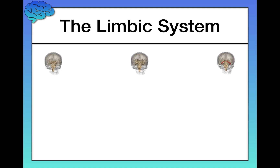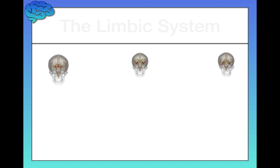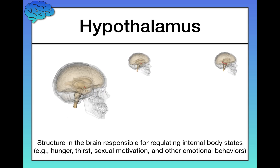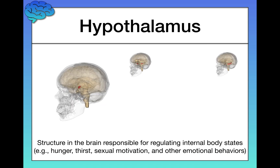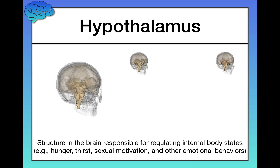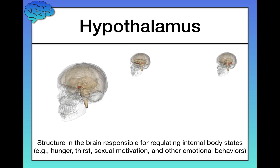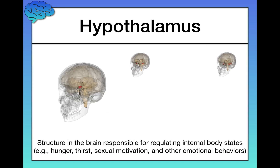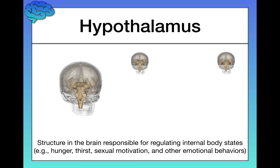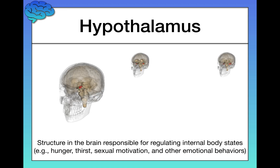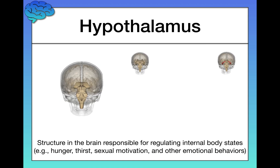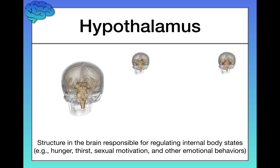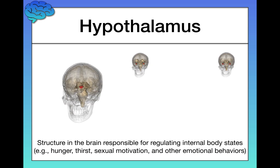Now I want to switch gears and talk about three more structures in the limbic system, which are also really important for psychology. First, the hypothalamus — a structure responsible for regulating internal body states, such as hunger, thirst, sexual motivation, and other emotional behaviors. I encourage you to think about the psychological implications of each of these. Some of these structures will return when we cover specific content areas like memory later in the course.